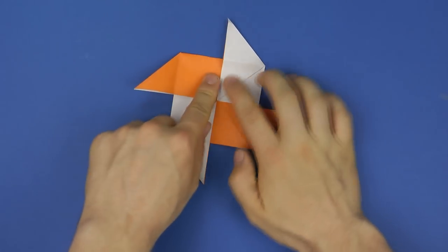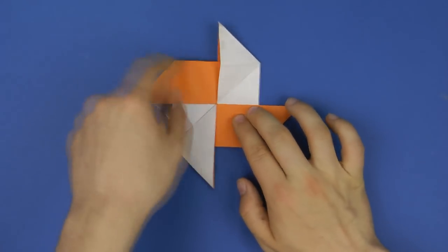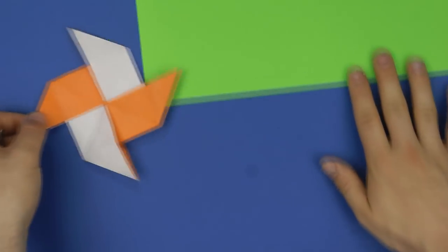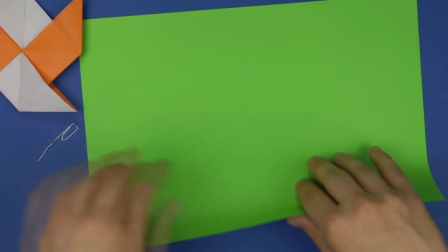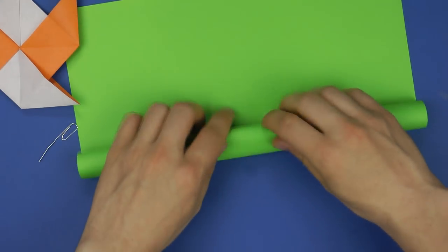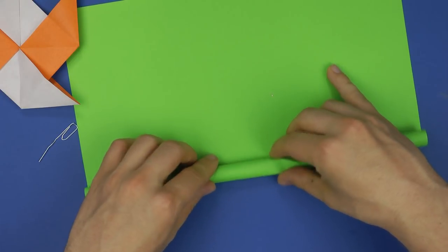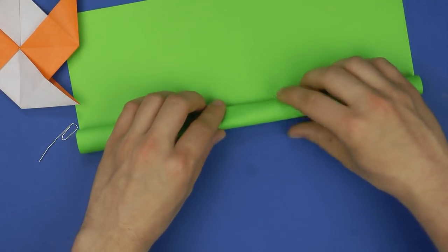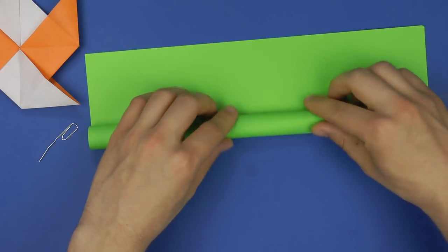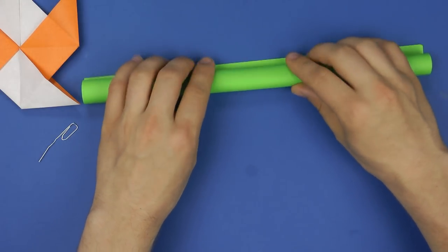A stick. And for that we just take the second sheet of paper and roll it up. You could also perfectly fine use some kind of barbecue steaks or any kind of steak from wood, a straw from some kind of soft drink you have but I'm using paper to keep it origami themed.